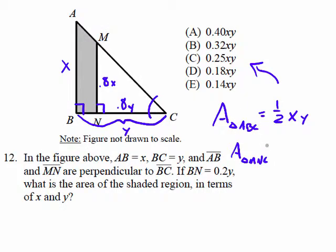and this is the area of the unshaded, which is ½ of 0.8X times 0.8Y. And 0.8X times 0.8Y gives us ½ of 0.64XY.